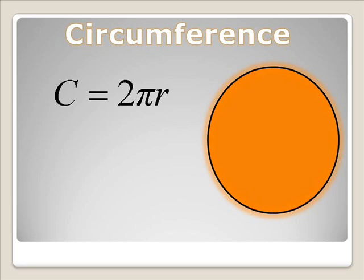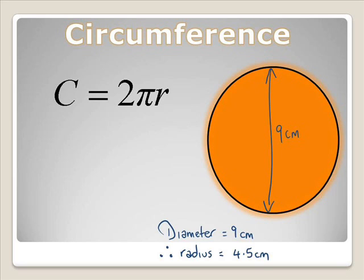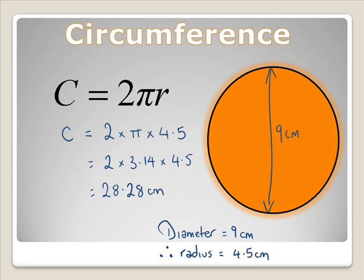Let's look at another example. In the next example we have a diameter which is 9cm. We have to work out what the radius is. The radius is going to be half the diameter. So half of 9 is 4.5cm. And we just substitute this into the formula. The circumference is 2 times pi by 4.5, which is 2 times 3.14 by 4.5, which gives us an answer of 28.28cm. And that's the circumference.